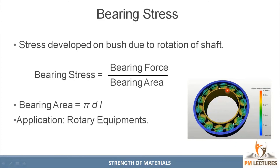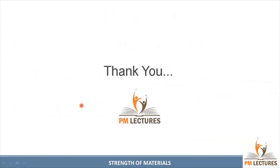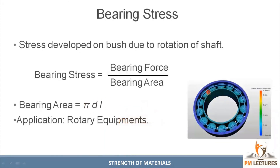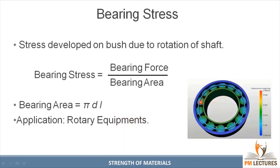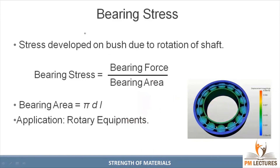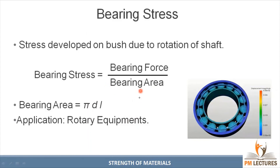Bearing stress formula: bearing forces divided by bearing area. Shaft and bearing area equals perimeter into length, which is Pi D into L. Most of the rotary equipment supports use bearing stress. You can use these types of stresses. See you in the next session. Bye.